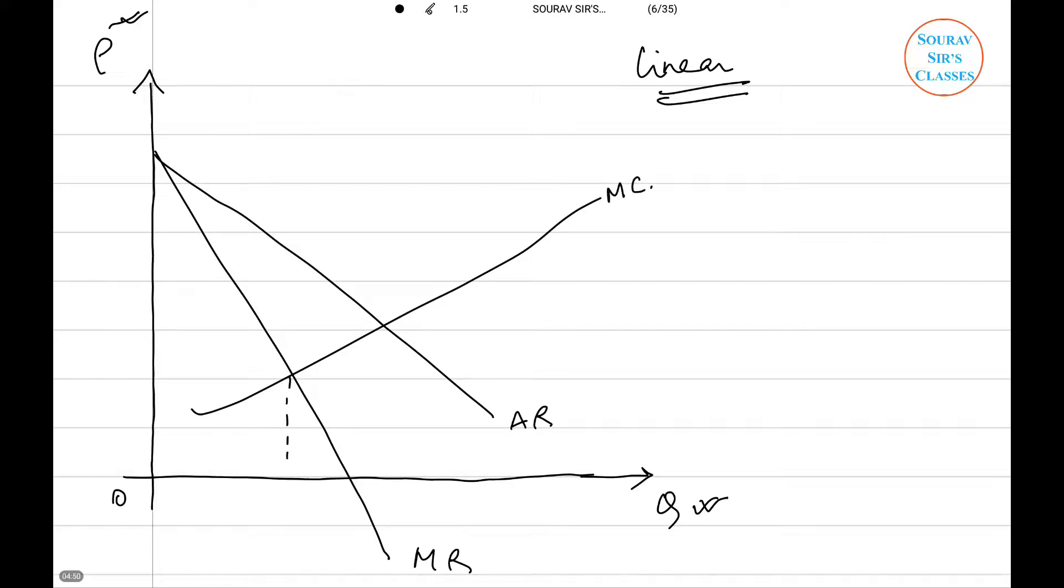Next you will have the marginal cost curve, so this is our MC. This is my average cost curve. Now this is the point where the average cost curve is tangent to average revenue, so this will give me the price P1 and this is the quantity Q1.